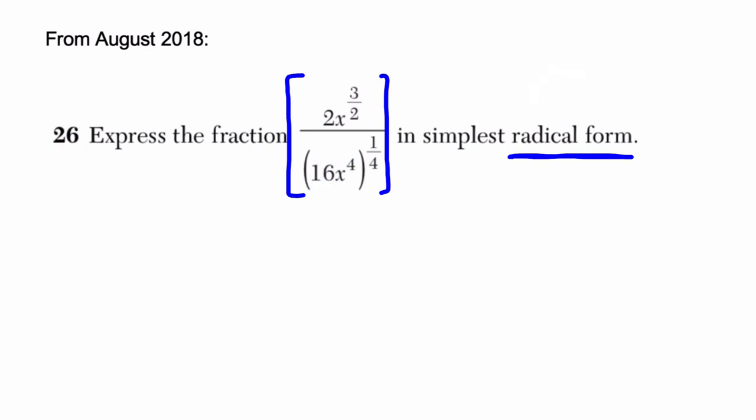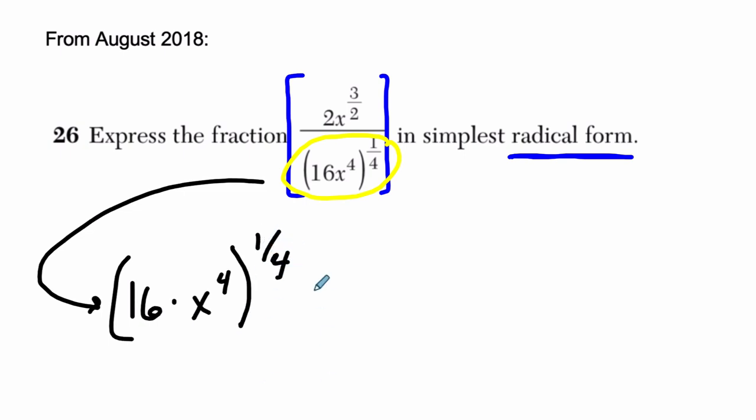So in this problem, what I would do first is look at my denominator here. Let's break this piece down. So this means we have 16 times x to the fourth. Those two factors are being multiplied, and the whole thing is raised to the one-fourth power. So the first thing I would do is distribute this exponent to these two factors. You can distribute exponents to factors as long as the exponent is outside the parentheses and all of your factors are inside the parentheses. So that means we're looking at 16 to the one-fourth times x to the fourth, the second factor, to the fourth.